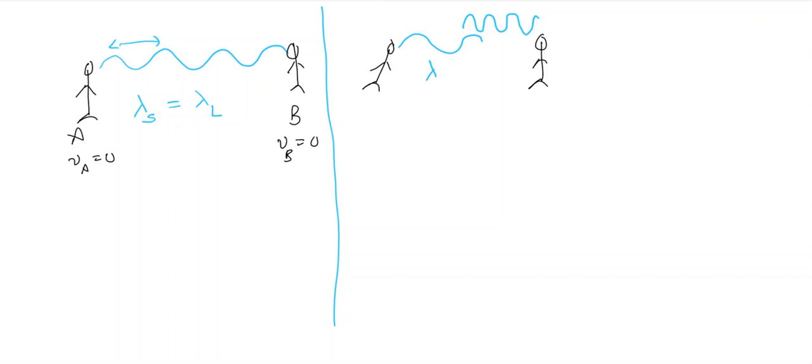And this is true even if you consider the source to be steady and the listener to be going away. So in this case, lambda s is greater than lambda l. Here also, lambda s is greater than lambda l.